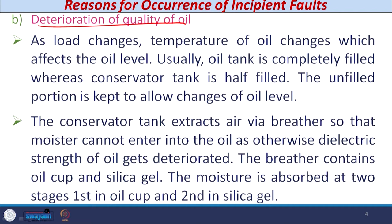The second reason is deterioration of oil quality. The transformer has two tanks: the main tank, which is completely filled, and the conservator tank, which is half filled to allow changes in oil level due to load variation. The conservator tank extracts air via a breather so that moisture cannot enter the oil, since moisture deteriorates the dielectric strength of the oil. The breather contains an oil cup and silica gel. Moisture is absorbed in two stages: first at the oil cup and second in the silica gel.